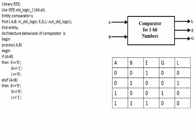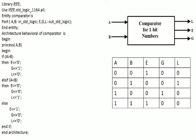Now these are the two conditions we have presented. If neither A is greater than B nor A is less than B, we put the third condition as else: equal becomes 1, greater becomes 0, and less becomes 0. This is how we use the if-else statements. Finally we write end if, then end process, and end the architecture.